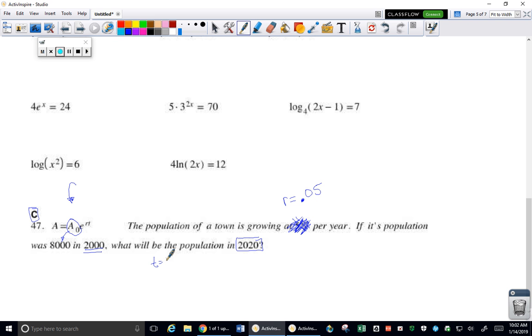Which means we have surpassed 20 years of time. So 2000 tells us that's time zero, and we want to know after 20 years, what will the population be?